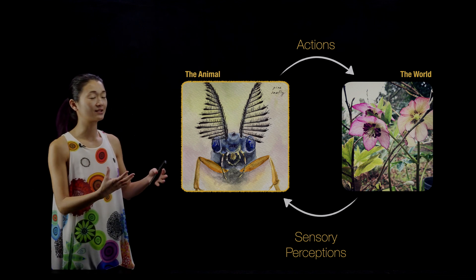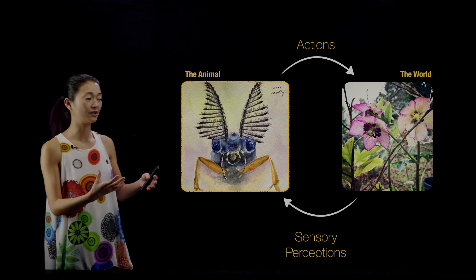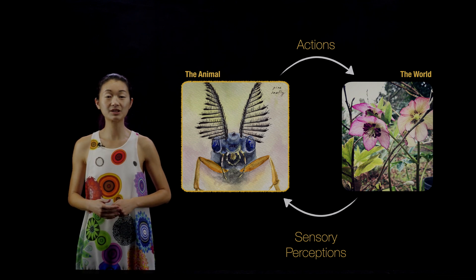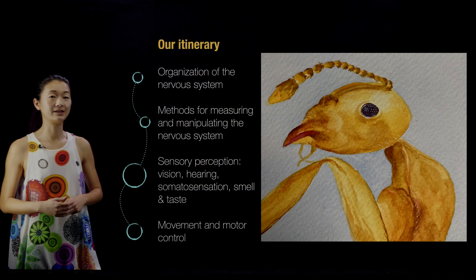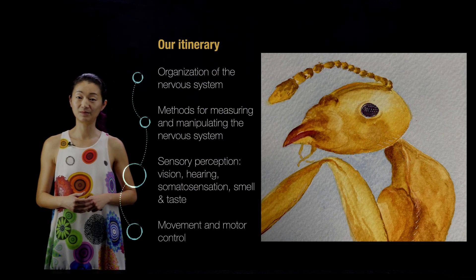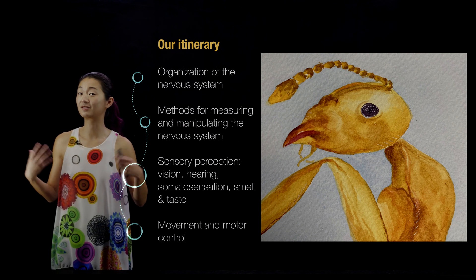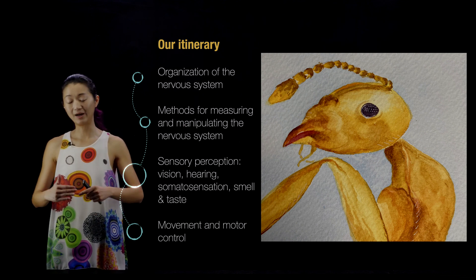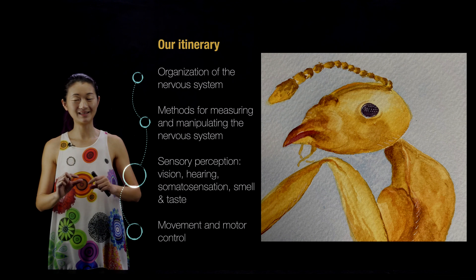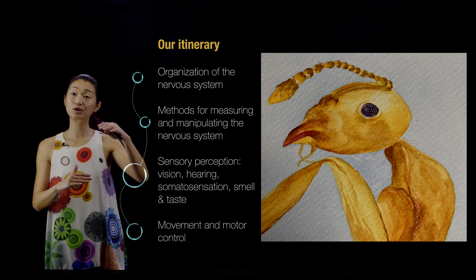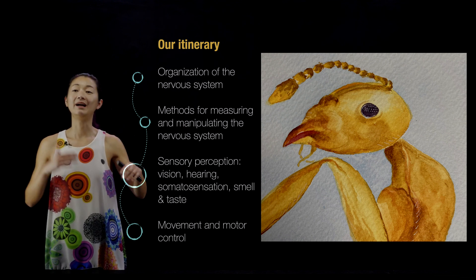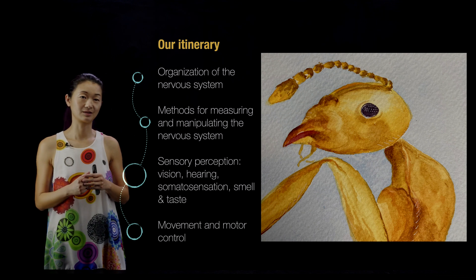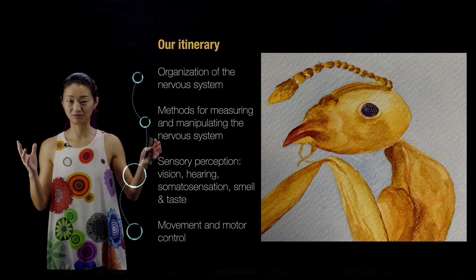So let me tell you a little bit more about the plan for the next set of lectures. We're going to start by thinking about the organization of the nervous system, because this is now a systems-level understanding. We're going to zoom up from the level of single cells and synapses into groups of cells, large groups of cells, talking about the general organization of the nervous system, because it's not just a blob of cells all connected to each other.